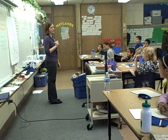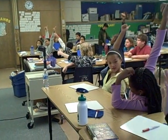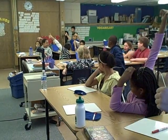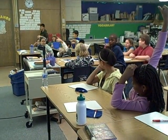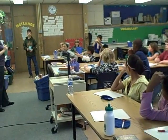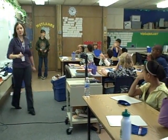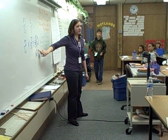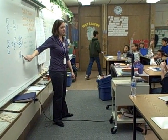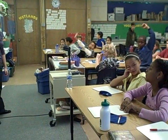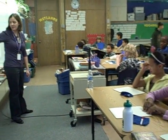Thumbs up if you think it's reduced and we're done. Thumbs down if you think we still have more work to do. I see two or three people with thumbs down — we have more work to do. We have five and we have thirty. What's the same about both those numbers? They can both be divided by five.